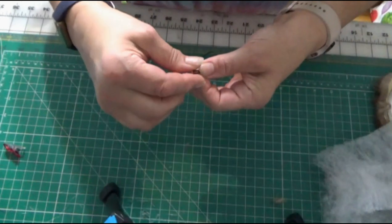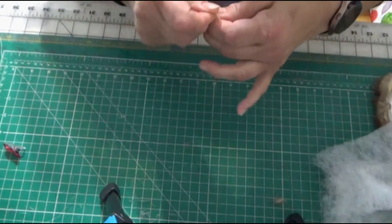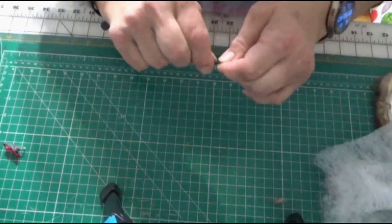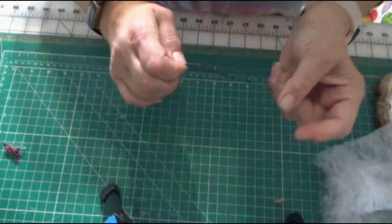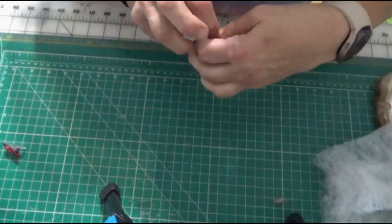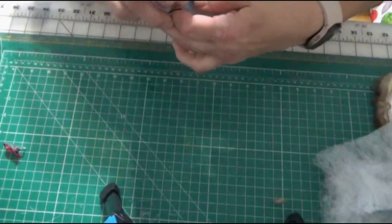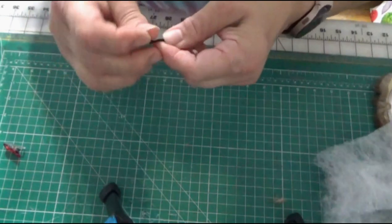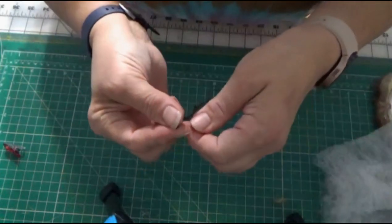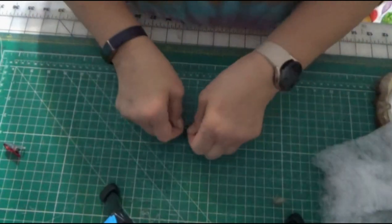What I did was I knotted it at the bottom, then I knot it again, pull it tight, knot it again. And when I go to sew it, I'm going to sew right here in the second section.